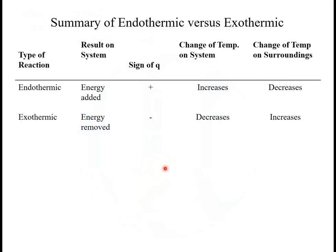So here's a summary. Endothermic means that energy is added to the system, Q is positive. The system temperature will increase because I'm adding heat to it, but the surroundings is going to decrease. So to us being the surroundings, it's going to feel colder.